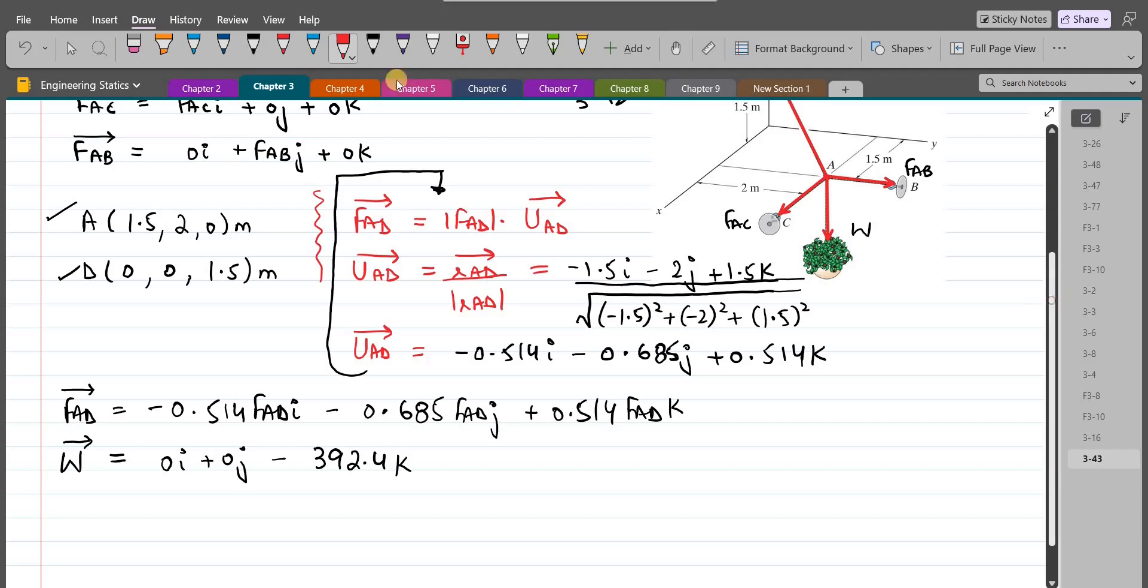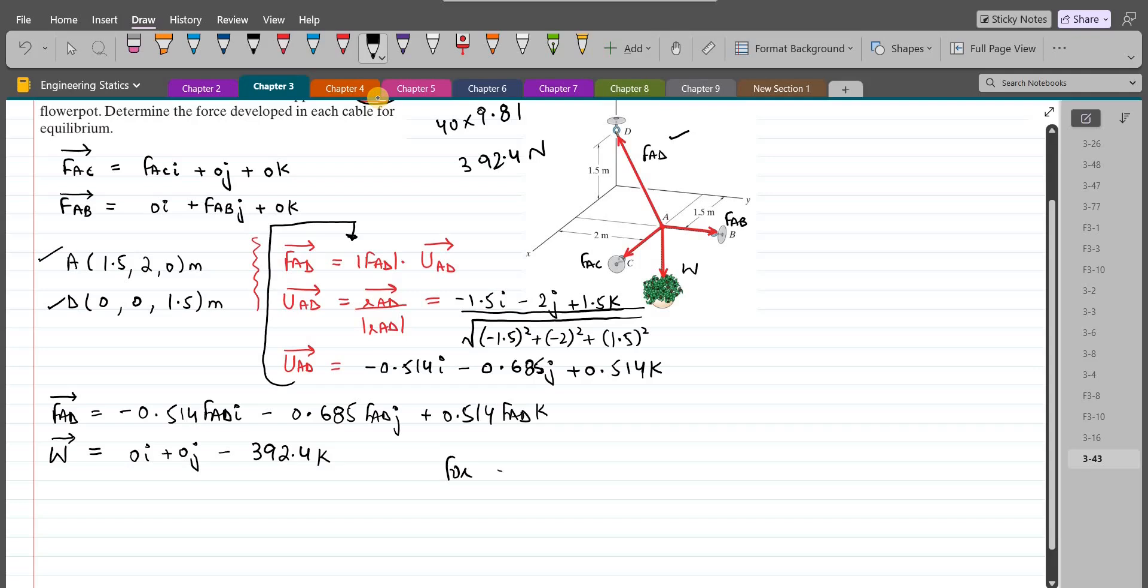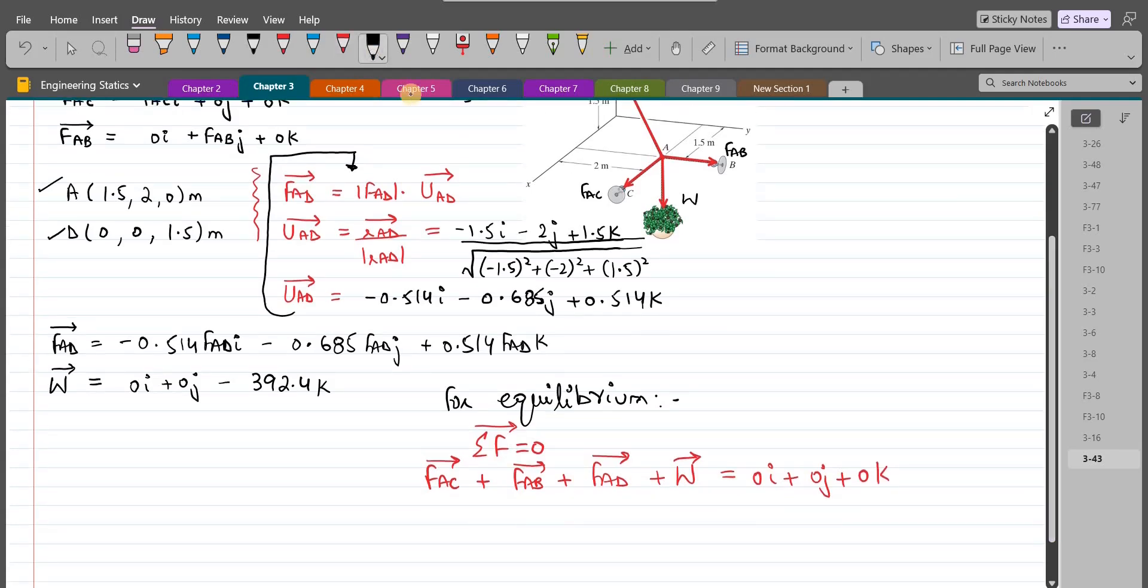So now we have to find the magnitude of these forces. And we know that the system is in equilibrium. So for equilibrium, the vector sum of all the forces should be 0. So the vector sum of FAC plus FAB plus FAD plus the weight force should be equal to 0I plus 0J plus 0K. Let's call this equation A.